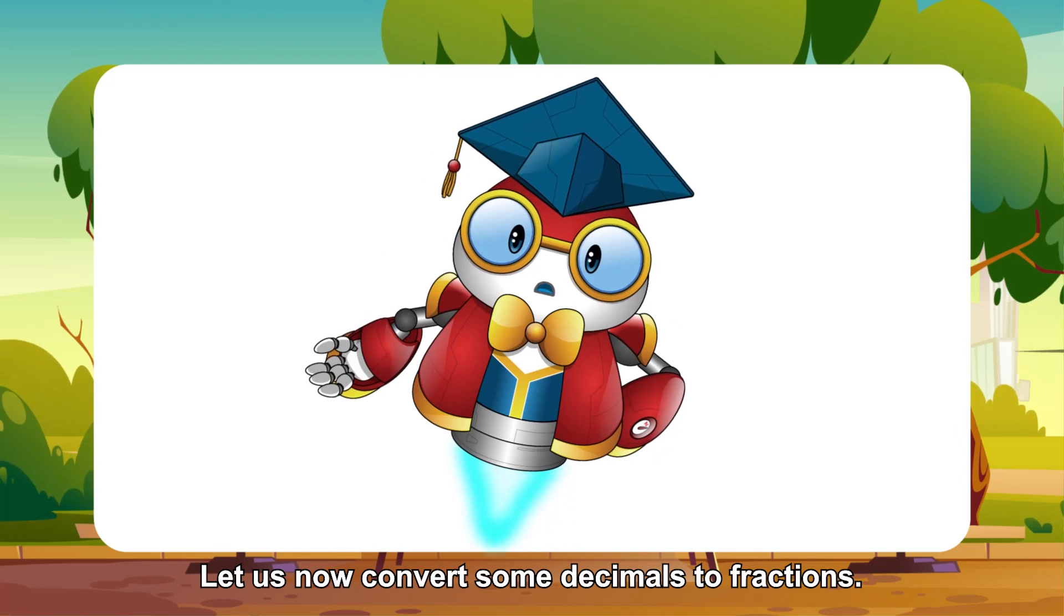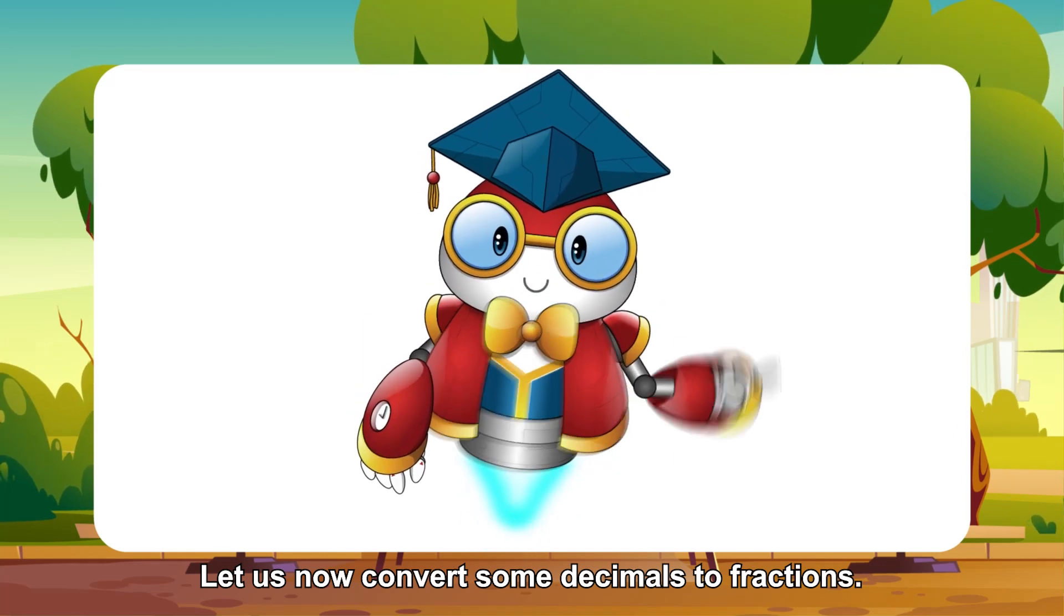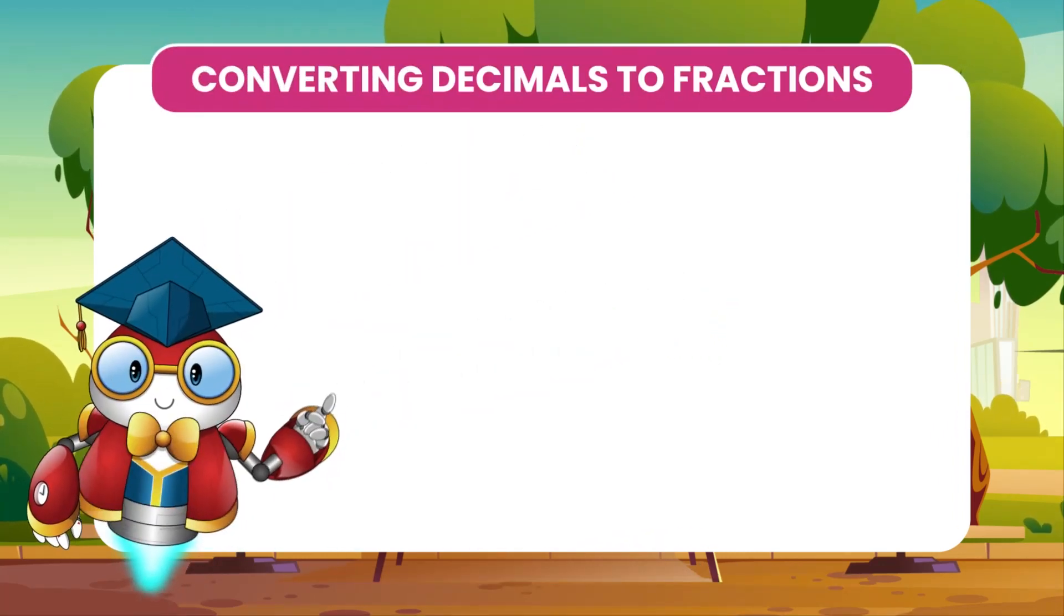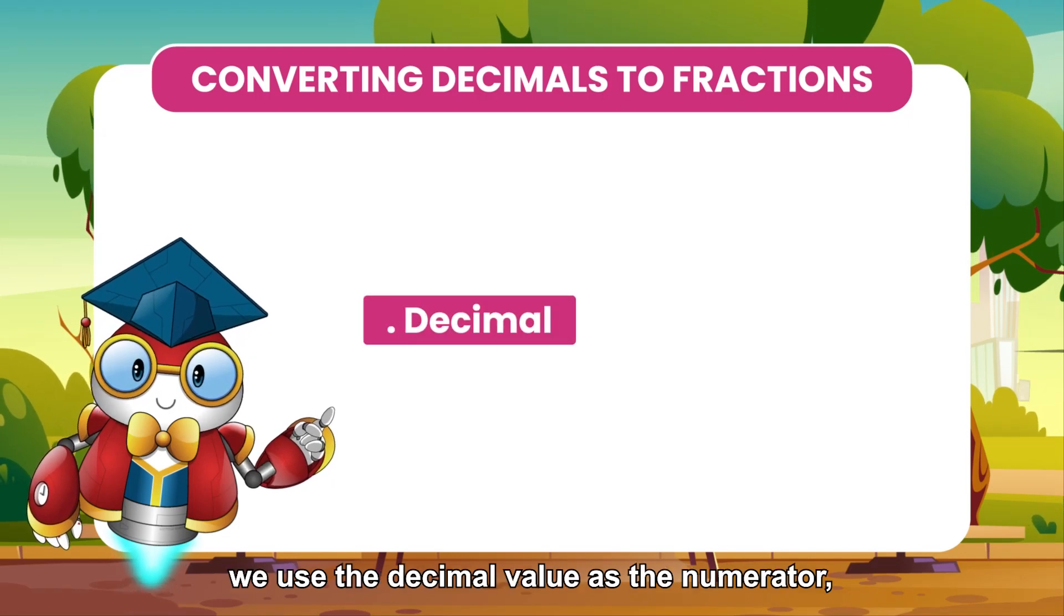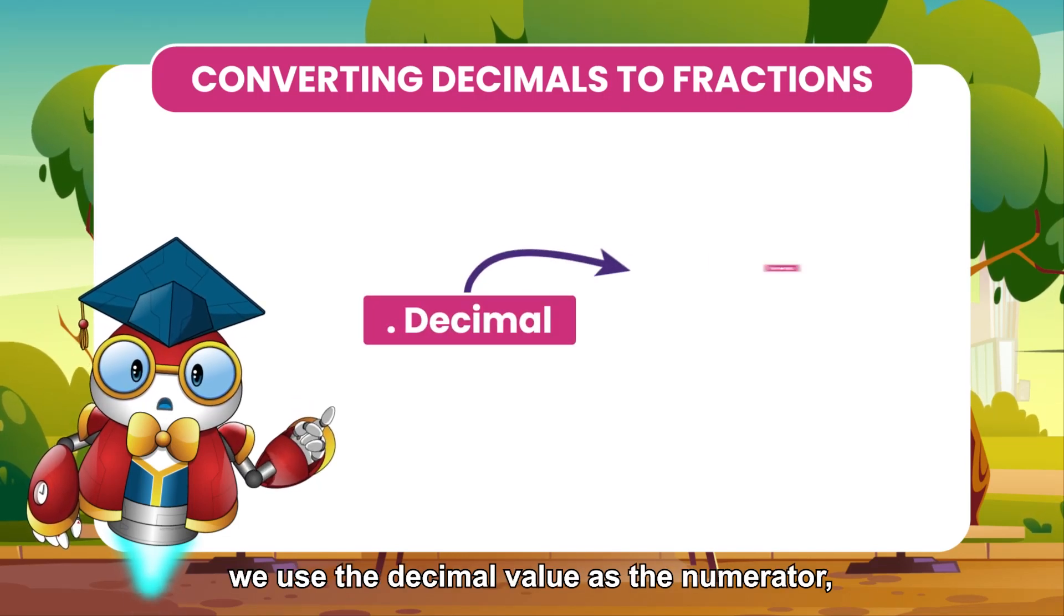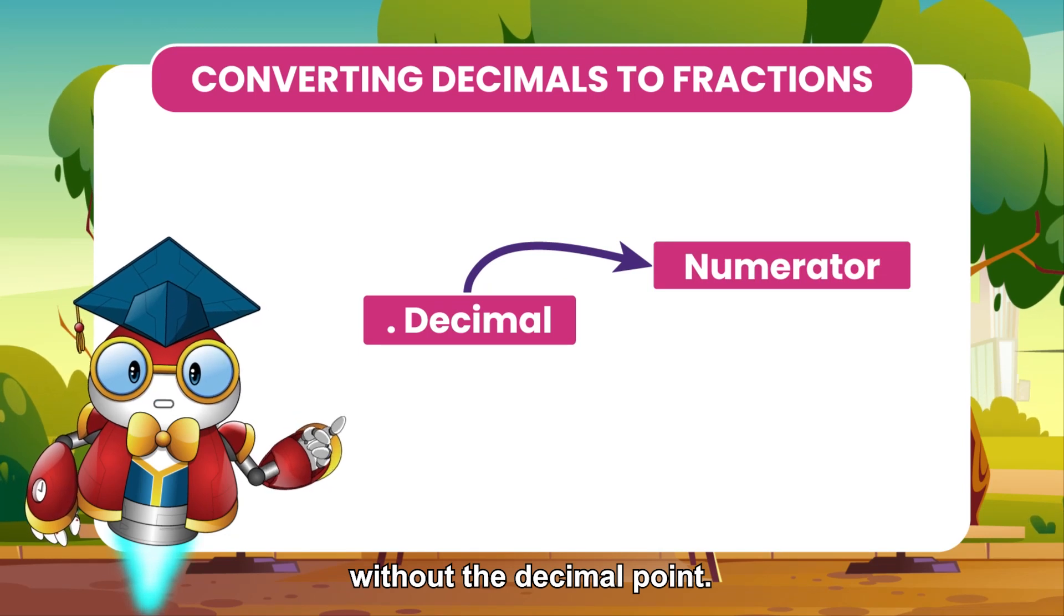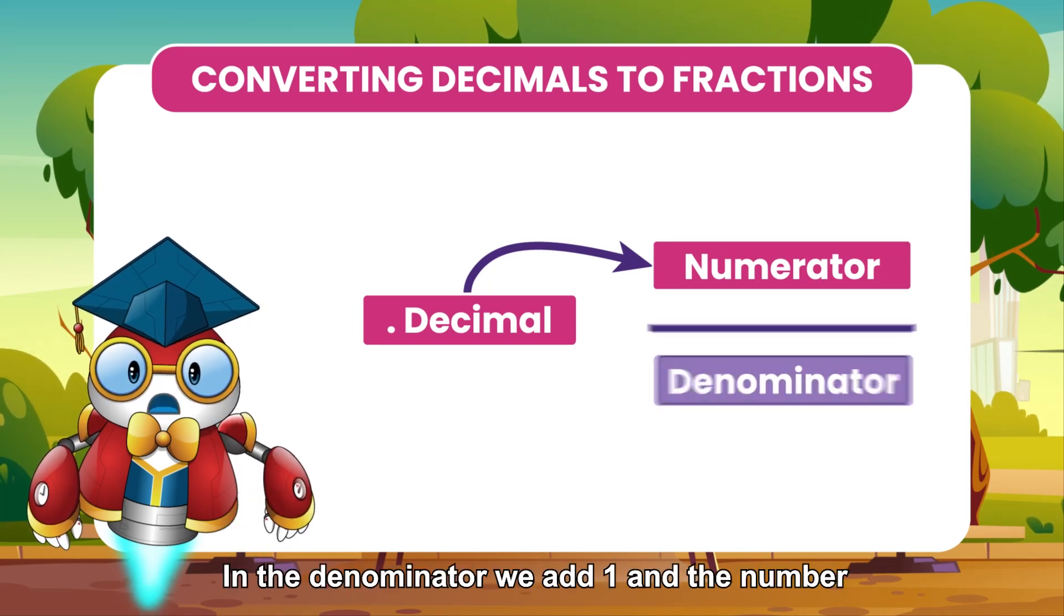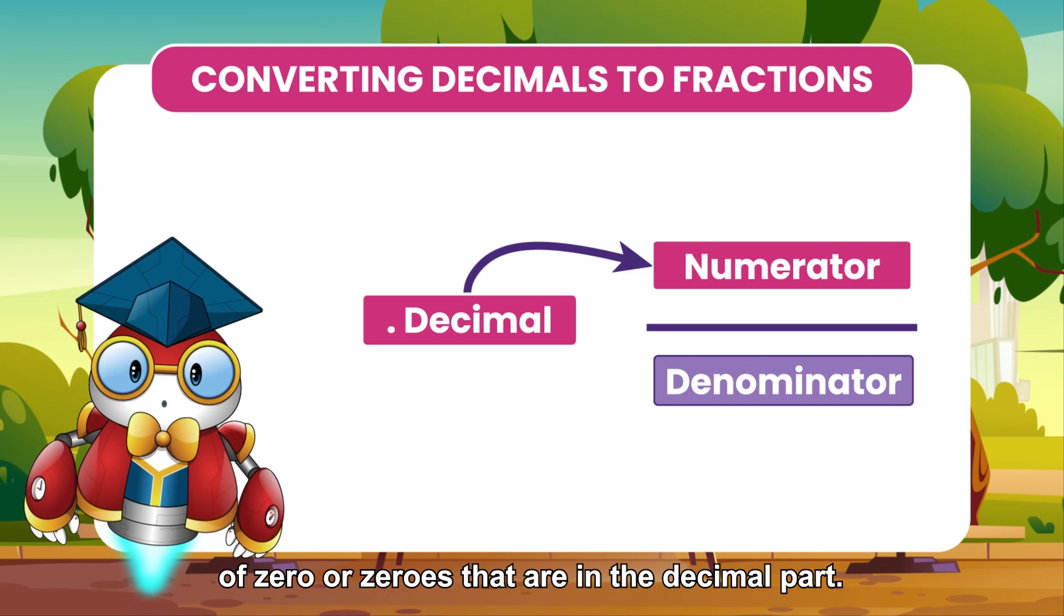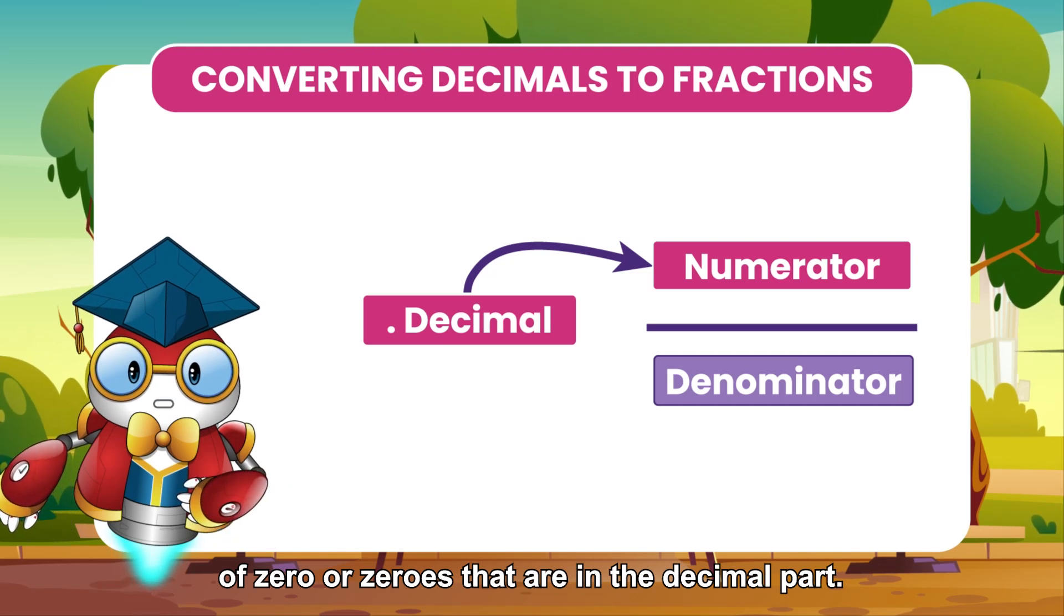Let us now convert some decimals to fractions. To express a decimal as a fraction, we use the decimal value as the numerator, without the decimal point. In the denominator we add 1 and the number of zero or zeros that are in the decimal part.